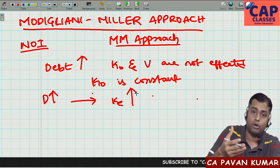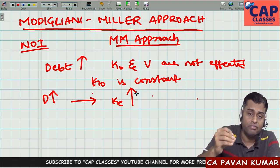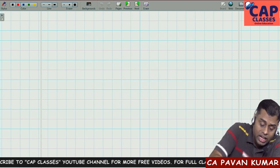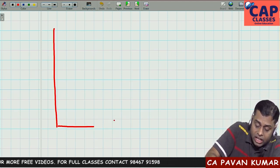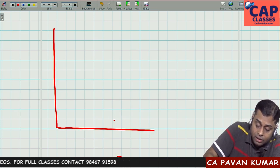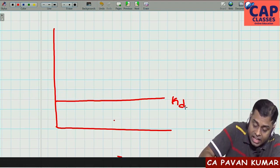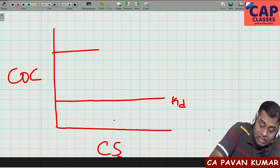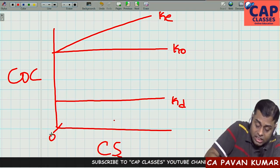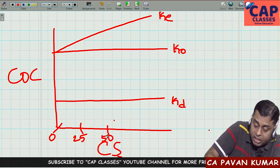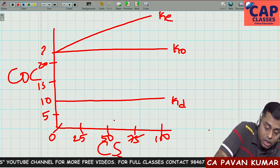Modigliani and Miller took the net operating income approach and gave it operational justification. Also, the net operating income approach had no diagrammatic representation, but the MM approach clearly showed how KE and KO work. In the diagram: the x-axis is capital structure (0%, 25%, 50%, 75%, 100% debt) and the y-axis is cost of capital (5%, 10%, 15%, 20%, 25%). KO is constant while KD is shown separately.